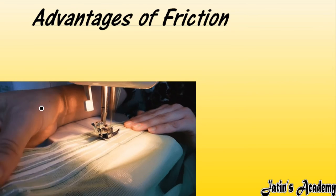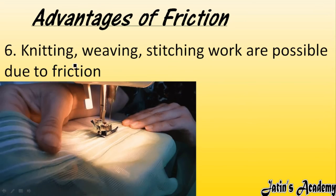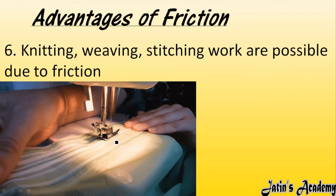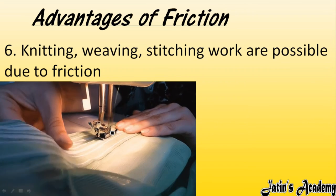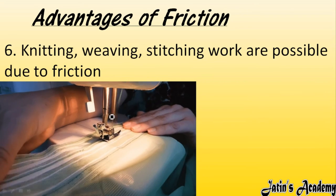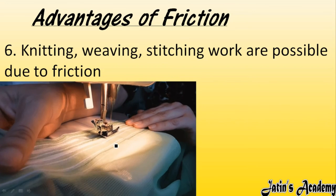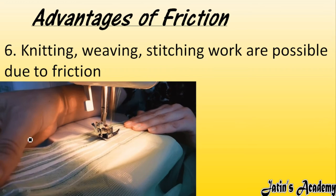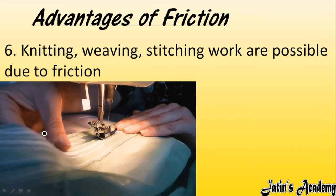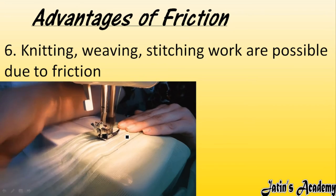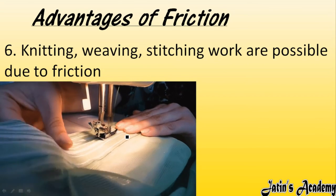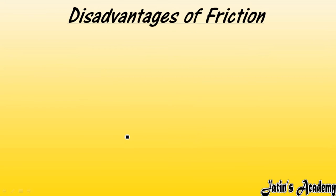Sixth advantage: knitting, weaving, and stitching work are possible due to friction. Friction provides an opposing force that retains the cloth on the machine. Without friction, the cloth would slide away from the machine, making stitching and weaving impossible.